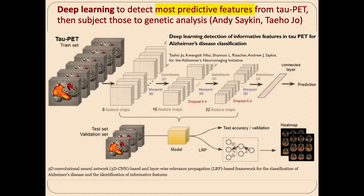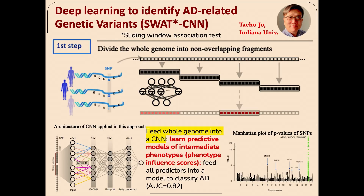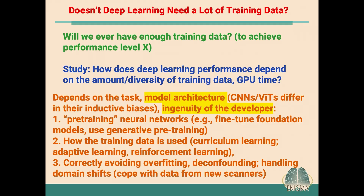Taiho Joe and Andy Sakin have asked: in tau PET, what features predict Alzheimer's disease? You can light them up, then grab the signal in that area in a huge database and search the genome with a CNN that goes along your genetic sequence to find markers associated with more amyloid in the brain. This is a nice hybrid imaging-genetic approach.